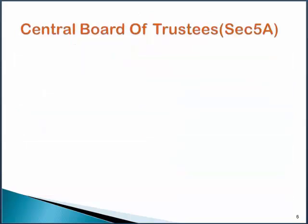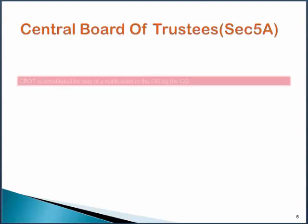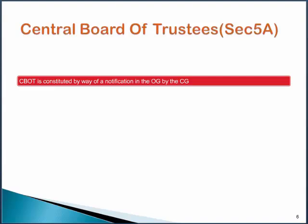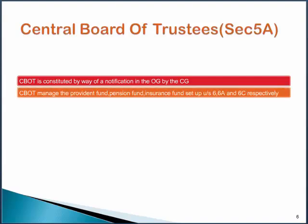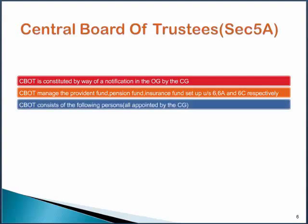Let's consider the meaning of the Central Board of Trustees and its composition. The Central Board of Trustees is constituted by way of a notification in the Official Gazette by the Central Government. The Central Board of Trustees will manage the Provident Fund, Pension Fund, and Insurance Fund which are set up under Sections 6, 6A, and 6C respectively. Each member of the Central Board of Trustees is appointed by the Central Government.